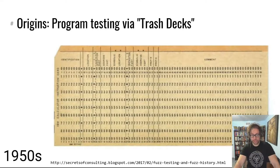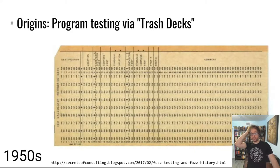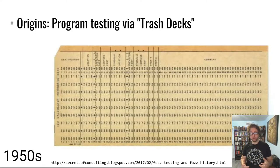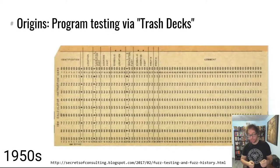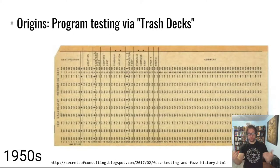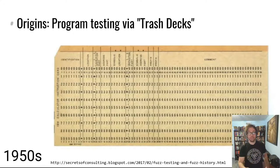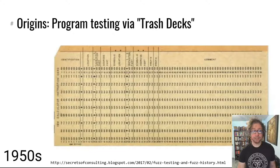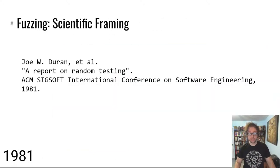Fuzzing had its origins way back in the 1950s. I tracked down this blog post — this is as early as I could find a reference to the concept of fuzzing. Back then, to test their programs which were programmed on punch cards, developers would take previously discarded punch cards and feed them as input into the programs they were trying to test — just unexpected data. That is fuzzing: the feeding of unexpected data to programs to see if they will misbehave.